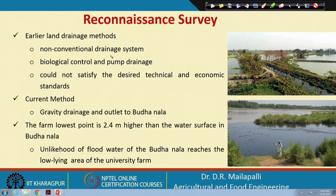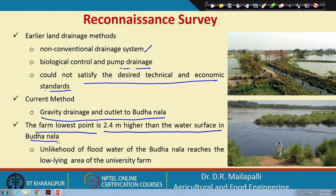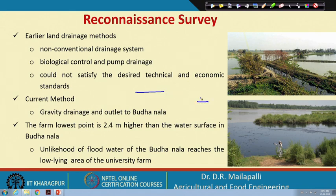Earlier land drainage methods used in the area were non-conventional drainage systems like bio drainage and pump drainage, but these could not satisfy the desired technical and economic standards before 1966. The current plan is gravity drainage with outlet to Budha Nala. Using gravity flow to Budha Nala is feasible because the farm's lowest point is 2.4 meters higher than the water surface in Budha Nala, so water from the farm can easily be disposed into Budha Nala by gravity.